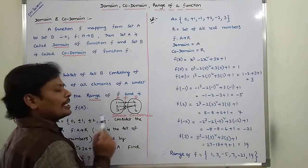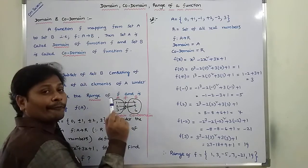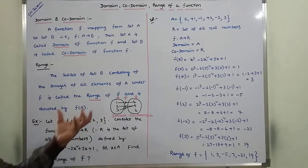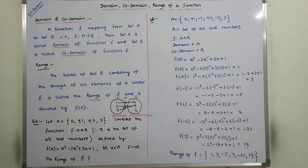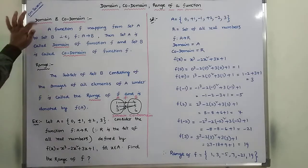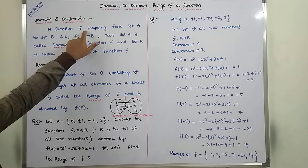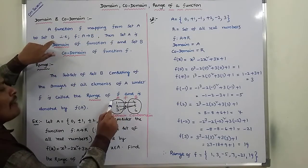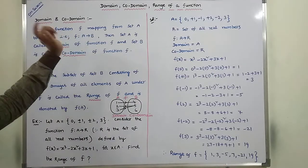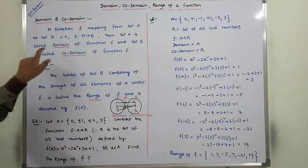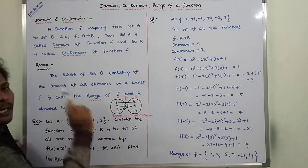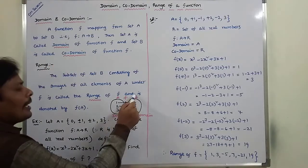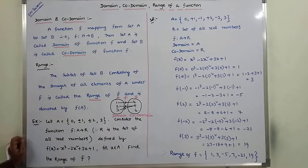Co-domain of function F is equal to {4, 5, 6}. Domain of function F is equal to {1, 2, 3}. This is the simple description. Now I am writing this: for a function F mapping from set A to set B, set A is called as the domain of function F and set B is called as the co-domain of function F.